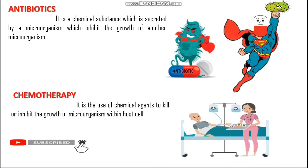Now let us discuss about antibiotics and chemotherapy. An antibiotic is a chemical substance secreted by a microorganism that can inhibit the growth of another microorganism. Antibiotics are chemicals used as a defense mechanism by some microorganisms against others. Alexander Fleming identified this concept in the microbial world and gave this wonderful discovery to humanity. Examples of antibiotics are erythromycin, streptomycin, tetracycline, amoxicillin, and penicillin — the first antibiotic discovered.